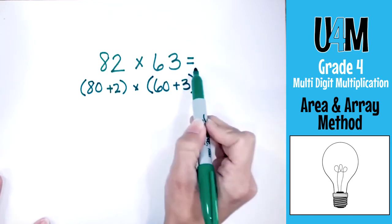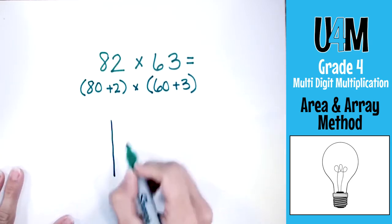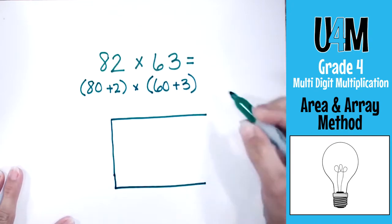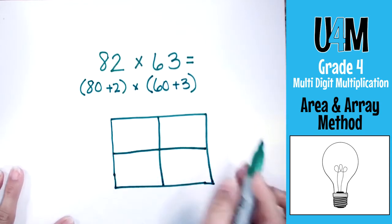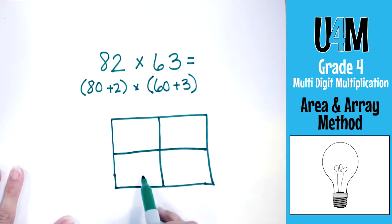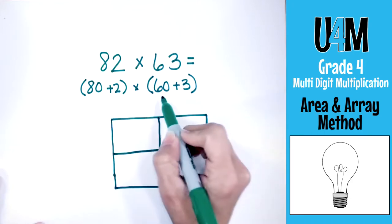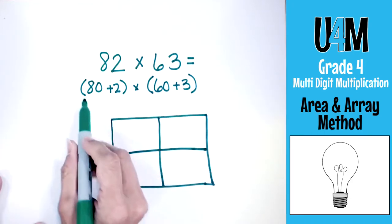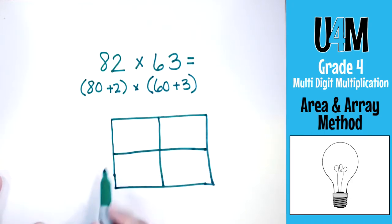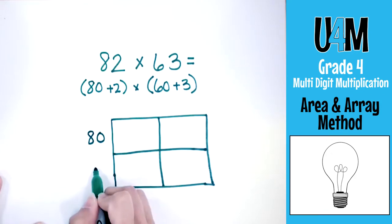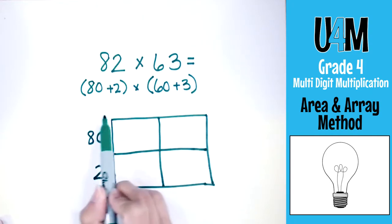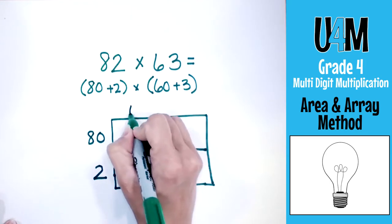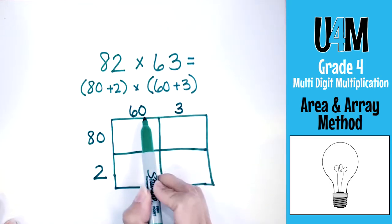Now we have two digits by two digits, so the area array box is going to have two columns and two rows — giving us four boxes. We need to place our numbers: 82 is 80 plus 2, and 63 is 60 plus 3. You want to put numbers from the same original number on the same side, so 80 and 2 go together. Then we put 60 here and 3 here.